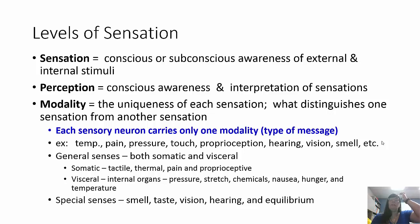We have two types of senses: general senses and special senses. General senses are somatic and visceral, whereas the special senses are your five senses — smell, taste, hearing, vision, and equilibrium. Generally speaking, somatic senses include tactile (touch), thermal, pain, and proprioceptive, which is awareness of where you're at in space. Or you can have visceral senses, which are your internal organs — you can feel pressure, stretch, hunger, nausea, those kinds of things.